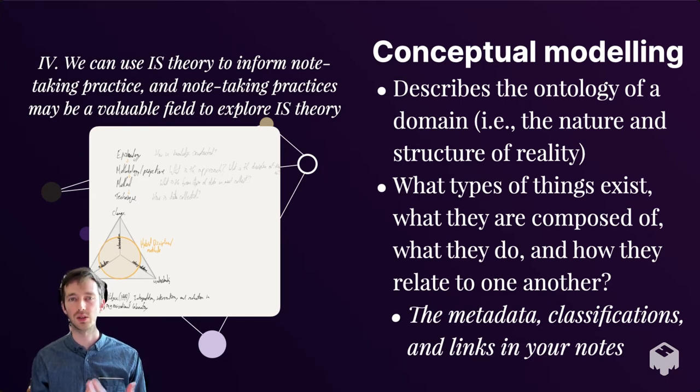The first is drawing on conceptual modeling. A conceptual model describes the ontology of a domain, the nature and structure of reality in that domain. That is, what types of things exist? What are they composed of? What do they do? And how do they relate to one another? In a note system, you might think of a conceptual model as describing the metadata, the classifications, links, structures, and content of your notes. What exactly are your notes? What are they of? What are they supposed to represent? What are they for?